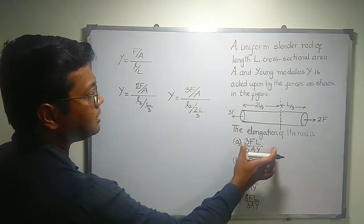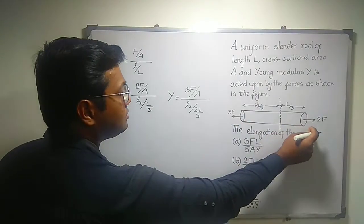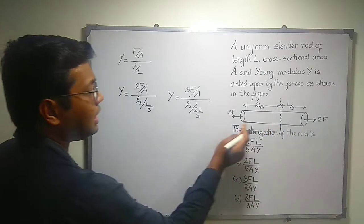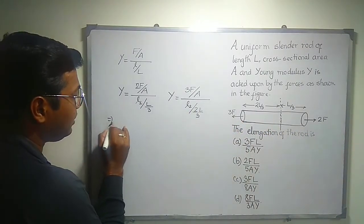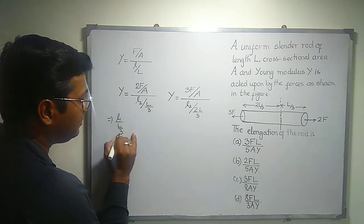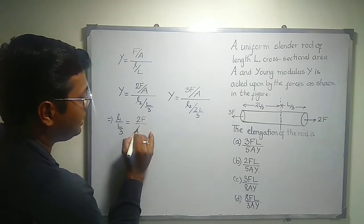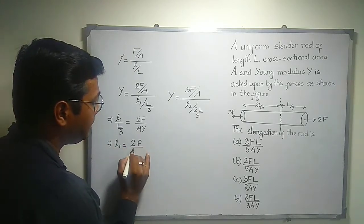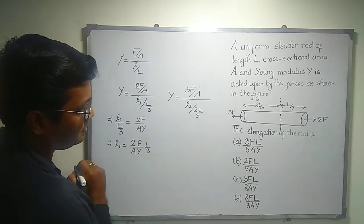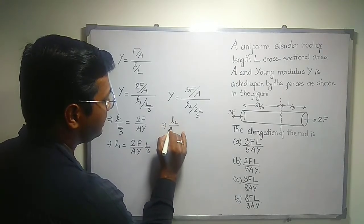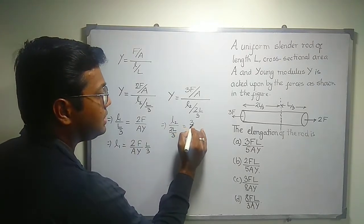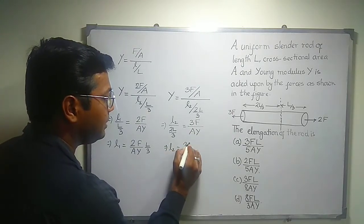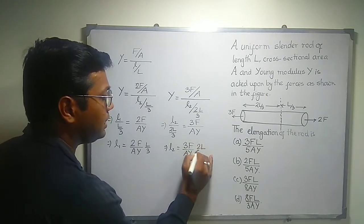Now here we have to find out the elongation of the rod. So L1 is equal to 2F divided by AY multiplied by L by 3. And here it becomes L2 divided by 2L divided by 3, which becomes 3F divided by AY. And this L2 becomes 3F divided by AY into 2L divided by 3.